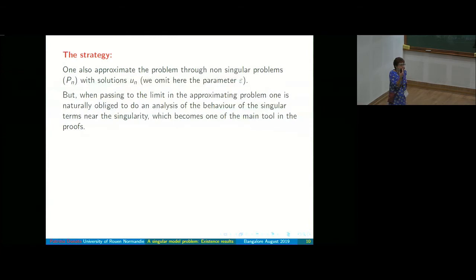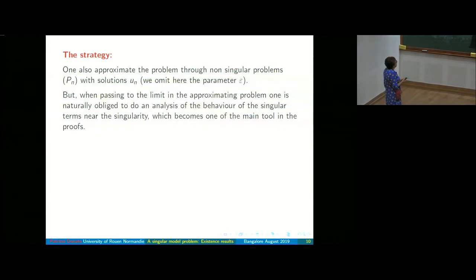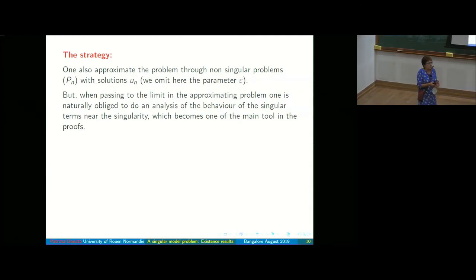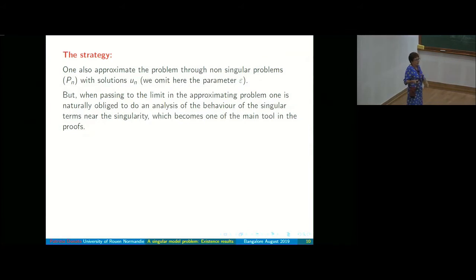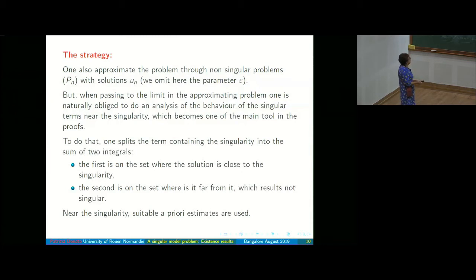Our strategy — keeping in mind the case of oscillating boundary with a jump — is to find another strategy for existence. Once we have a priori estimates for existence, we also have a priori estimates for homogenization in the same way. The idea is to approximate the problem by a non-singular problem as before, but when we pass to the limit we do something different. The main tool is to split the singular term into two parts: one part which is good, and one part which is near the singularity where we take a small value of the function.